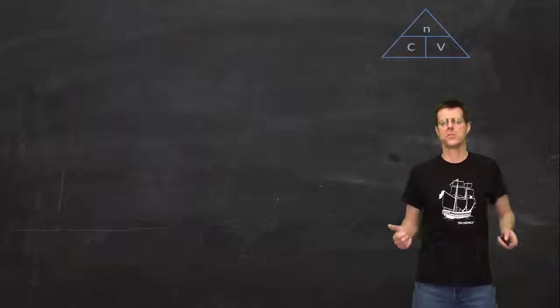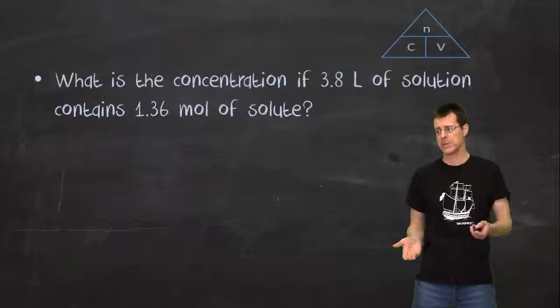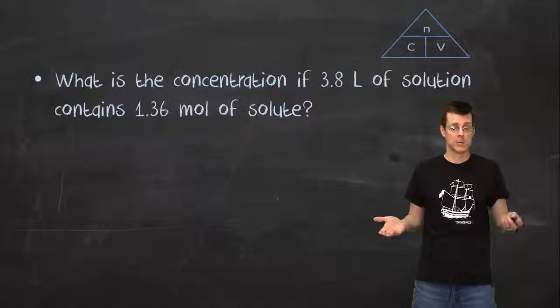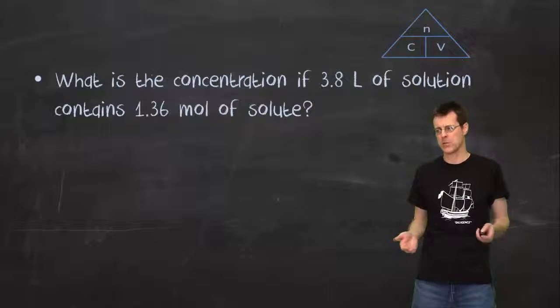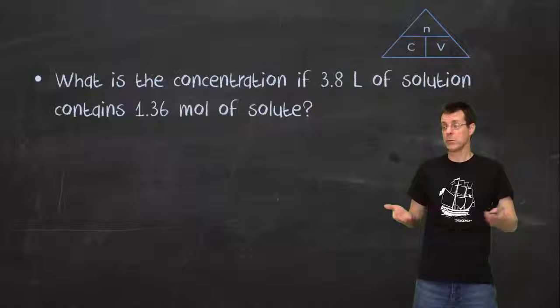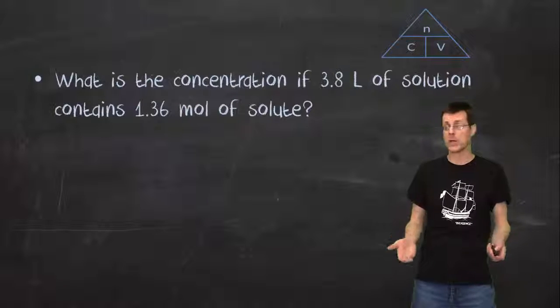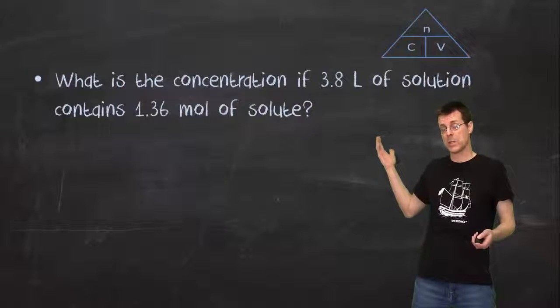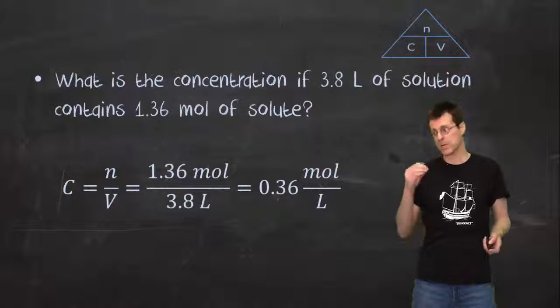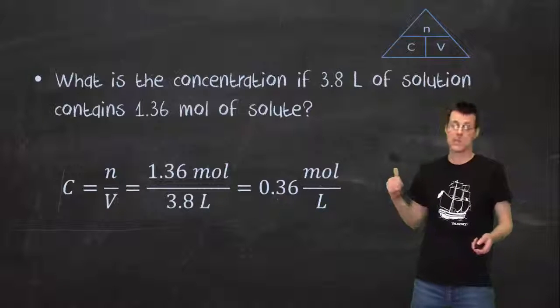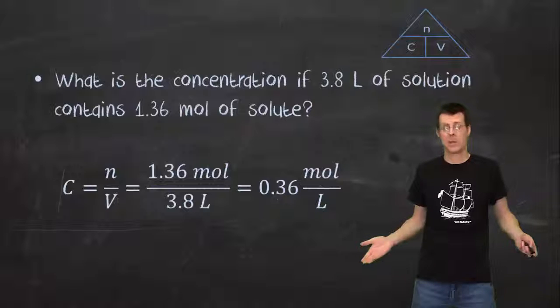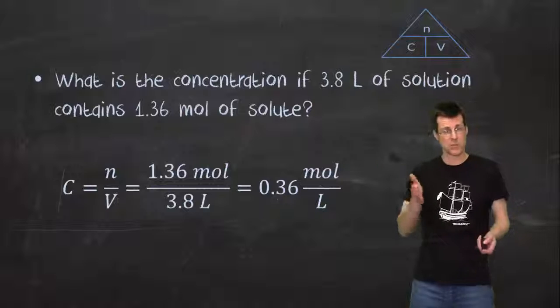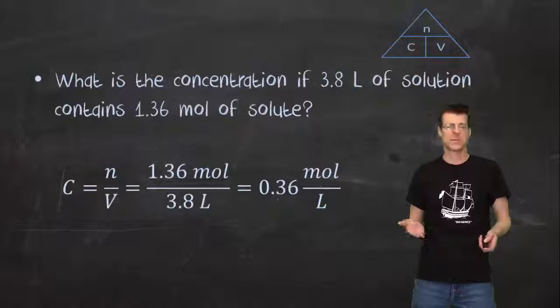Let's move on and use that triangle. We'll jump right into some questions. The question might say what is the concentration, or what is the molar concentration, but probably just what's the concentration. We look at our triangle, the units we have, and what we're trying to find. We're trying to find moles per liter. We cover up the C, we need number of moles on top and volume on the bottom in liters. I just dump it into the formula and it comes out with an answer of 0.36 moles per liter.